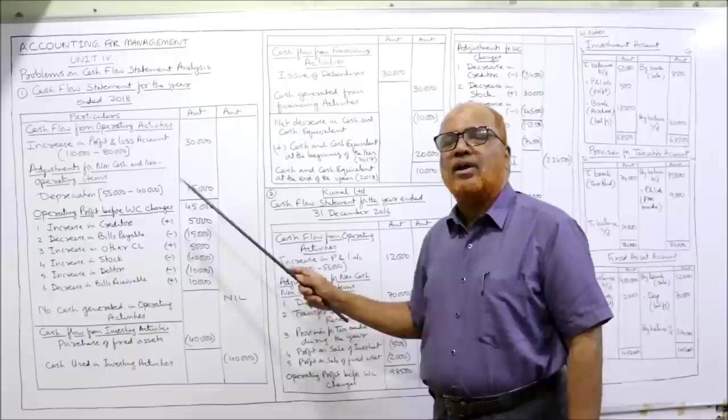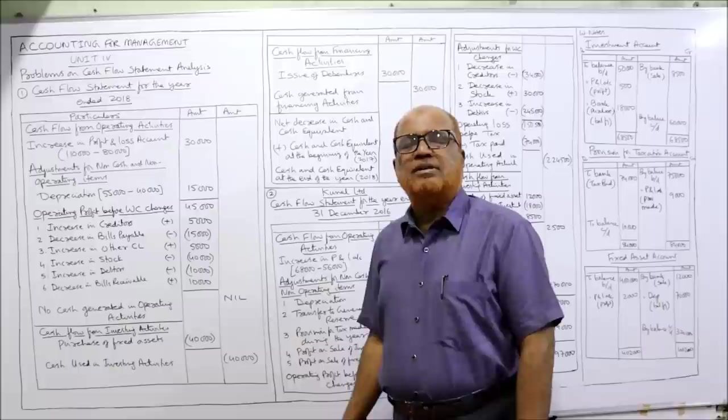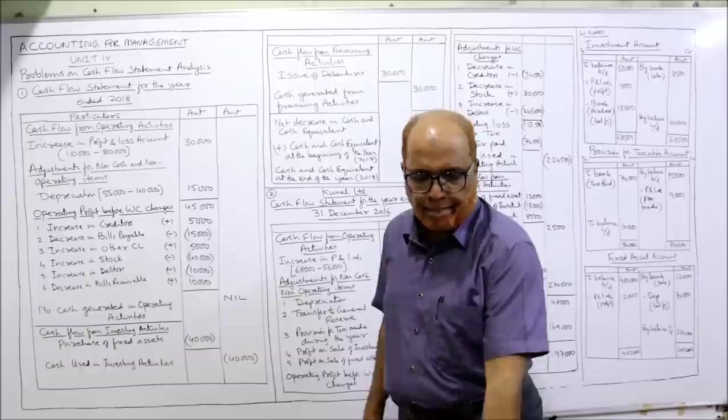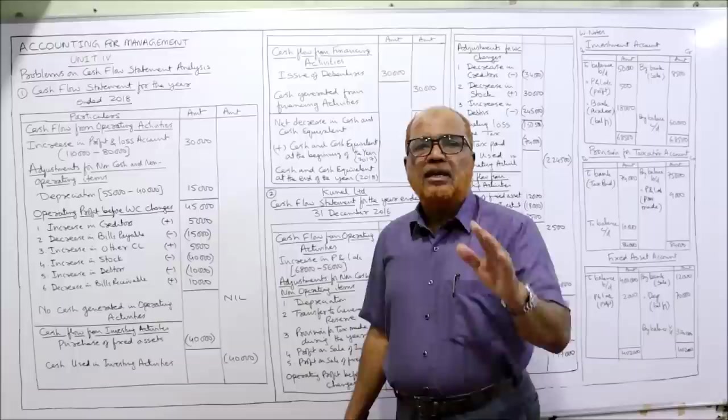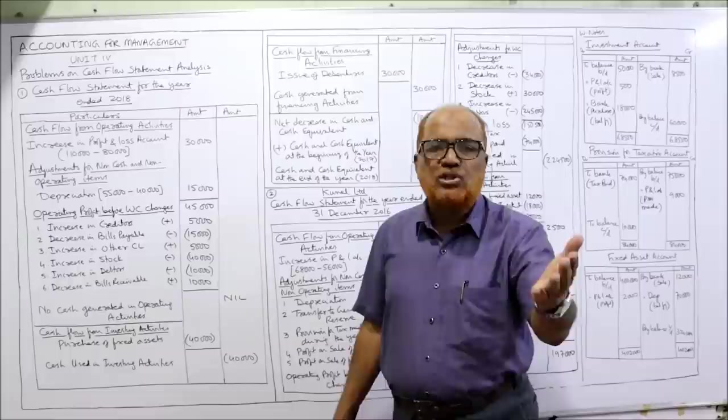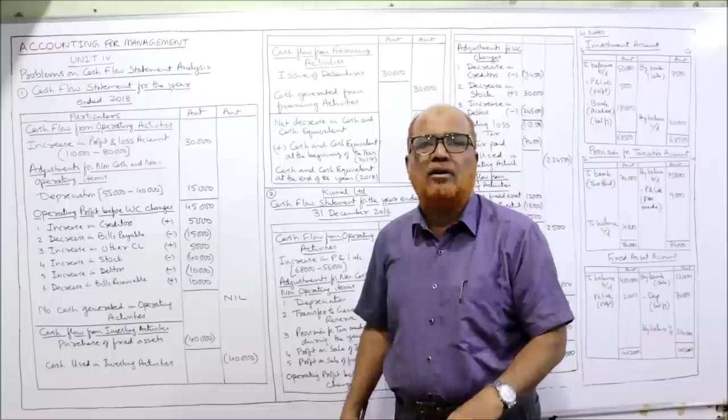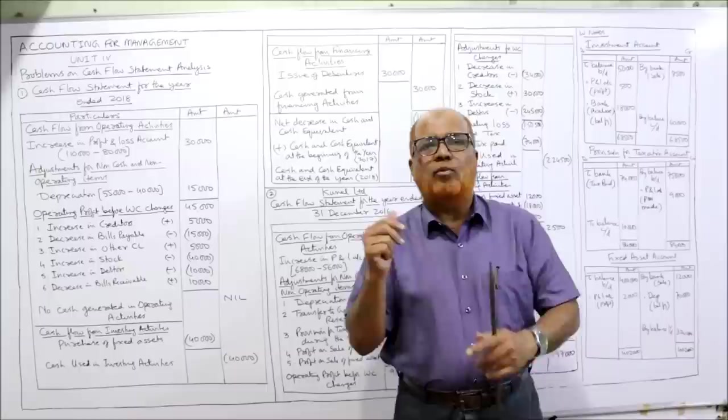Now we have to adjust for working capital changes — meaning changes in current assets and current liabilities. The rule: increase in current liability and decrease in current asset should be added; the opposite should be deducted. Remember this rule: increase in current liability and decrease in current asset should always be added. While watching this video, keep a notebook beside you.